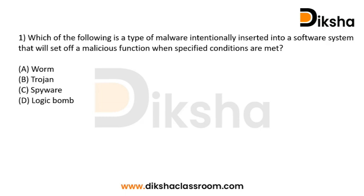Malware is software intended to cause a harmful impact on a computer system. There are different types: viruses, worms, Trojans, spyware, and logic bombs. A worm is a type of malware that spreads copies of itself from computer to computer through storage devices. An important aspect of a worm is that it can replicate itself without any human interaction and does not need to attach itself to a software program in order to cause damage.